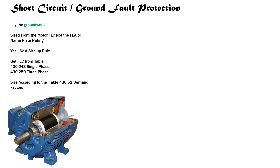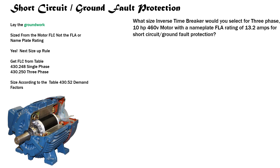I'm really excited about today's video. We're going to be bringing together everything that we've been learning this week and actually selecting our short circuit ground fault protection size. What size inverse time breaker would you select for a three-phase, 10 horsepower, 460 volt motor with a nameplate FLA rating of 13.2 amps for short circuit ground fault protection? Remember, when we're sizing short circuit ground fault protection, we're never going to use the FLA or the nameplate rating — we're only going to use the FLC.